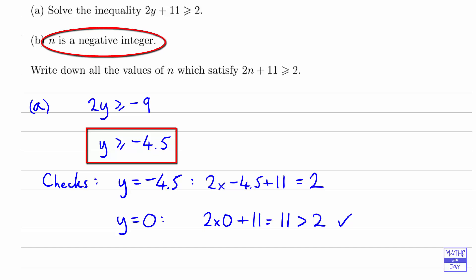Looking at part B, we're told that n is a negative integer, so that means it's a negative whole number. We want to write down all the values of n which satisfy 2n plus 11 is greater than or equal to 2. You can see that from what we've done in the first part, we know that n must be greater than or equal to negative 4.5.